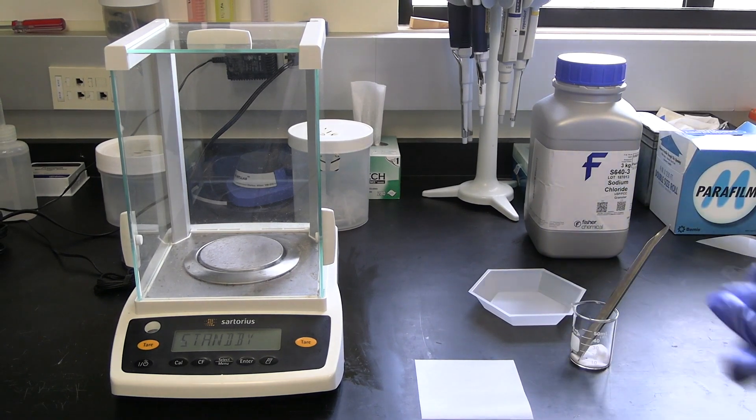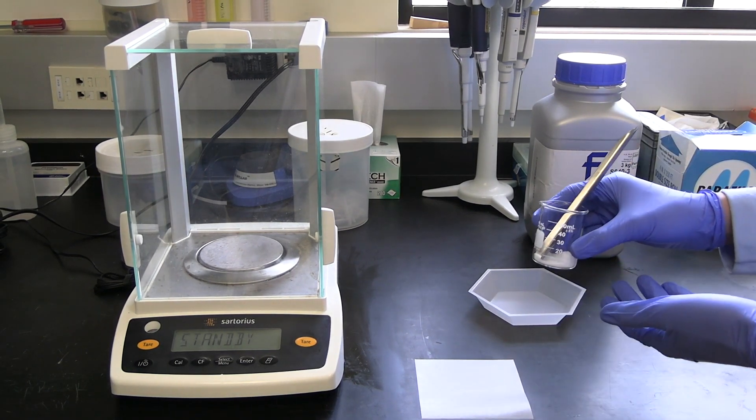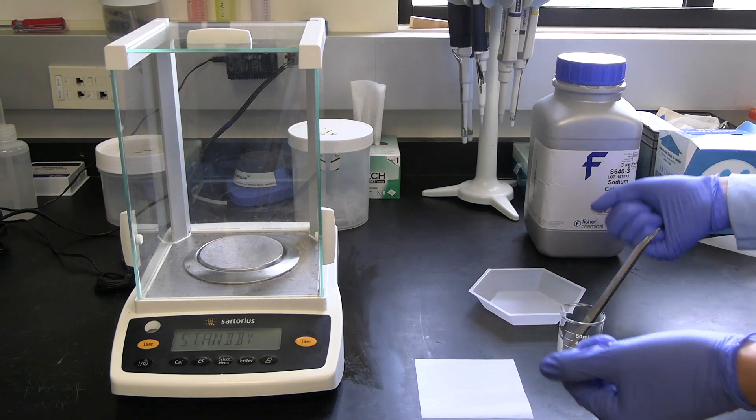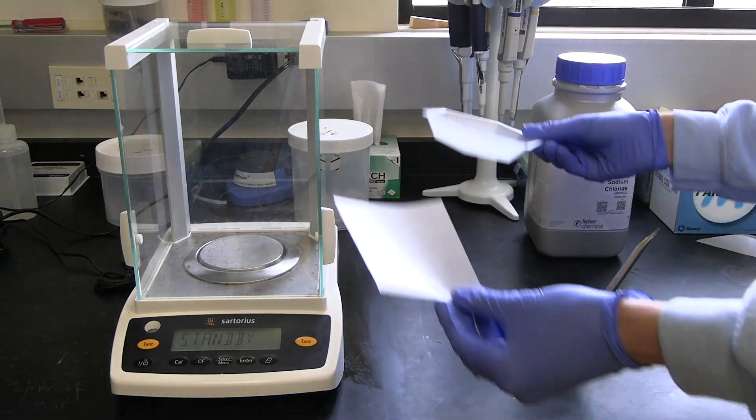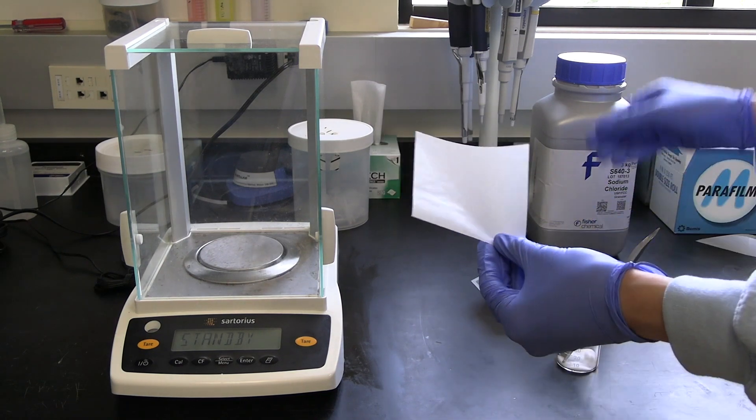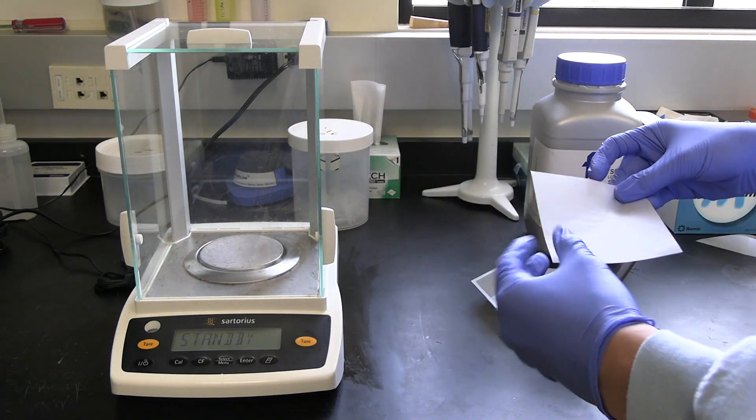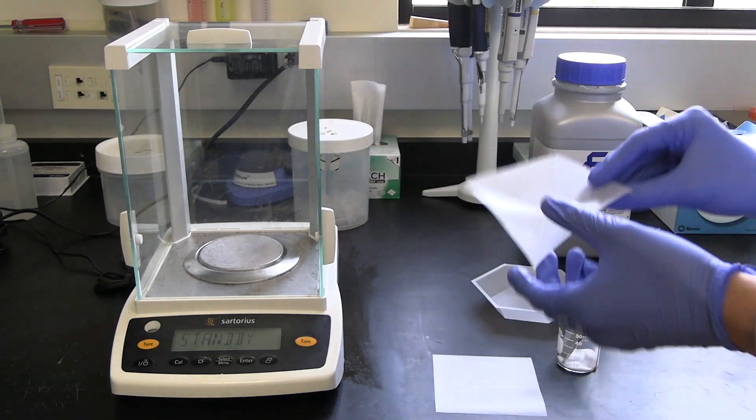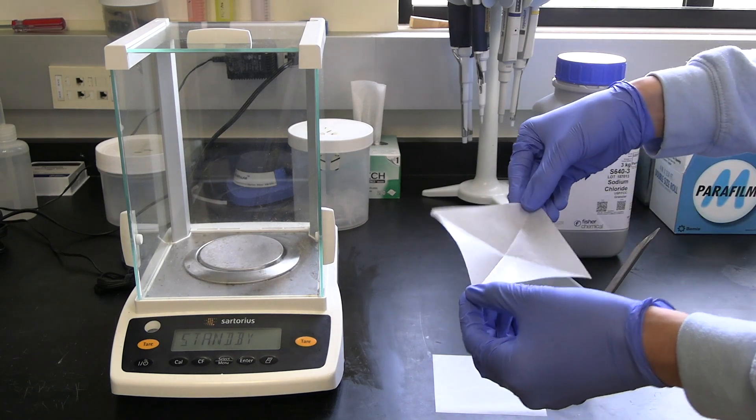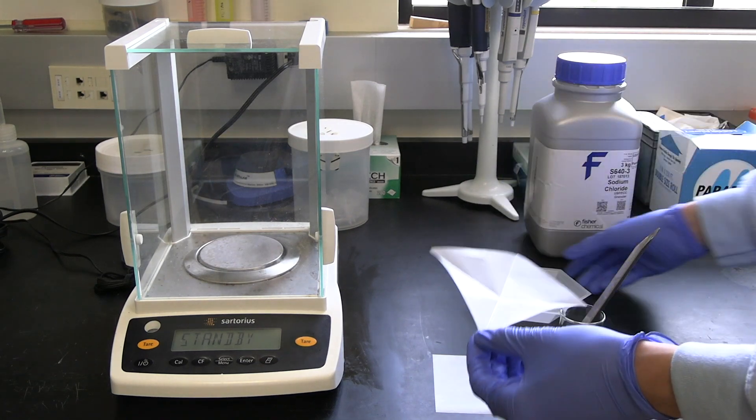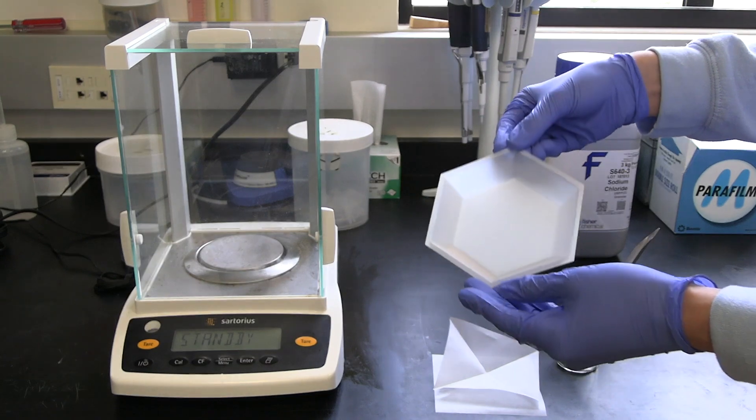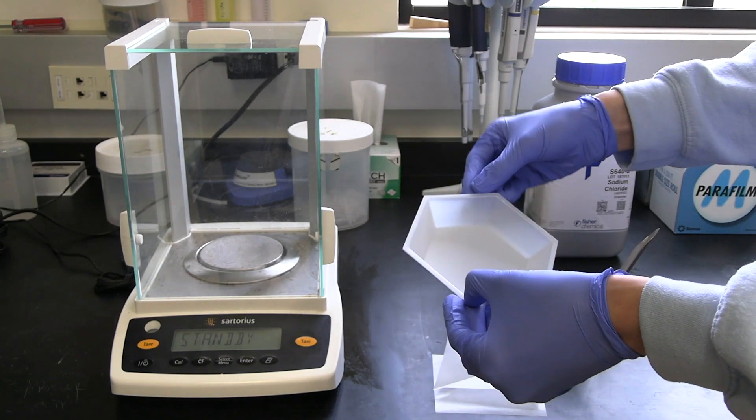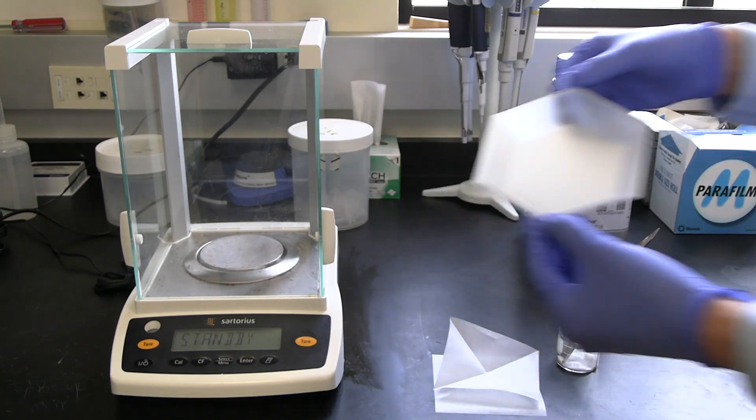And now, to actually weigh the sodium chloride substance, we can use two different types of weighing material. We can use a weigh paper and crease it along both diagonals to create some sort of weigh boat. Or, we can use an actual weigh boat, which has sides to prevent the material from falling out.